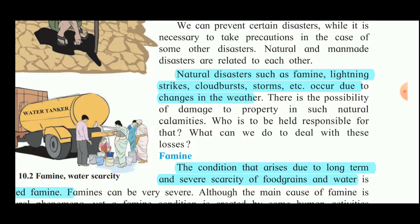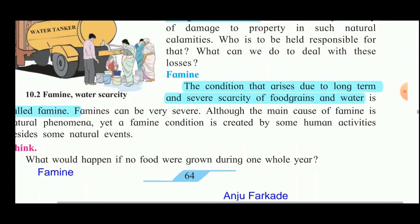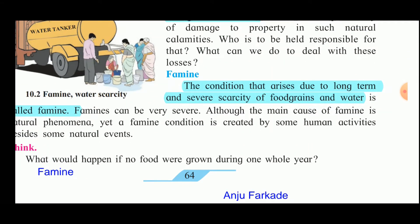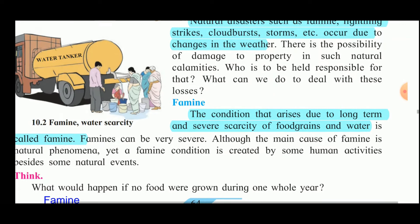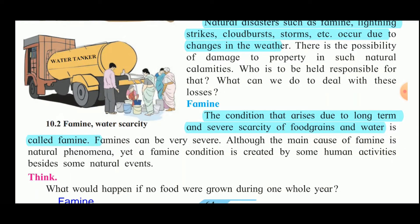The first natural disaster we will study is famine. The condition that arises due to long-term or severe scarcity of food grains and water is called famine. In the picture, you can see a water tanker ordered due to water scarcity. In the summer season, you must have seen on TV or in newspapers that water scarcity exists in many places including Mumbai.